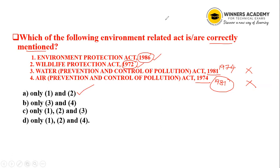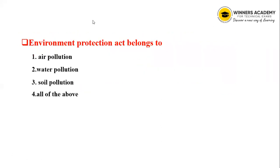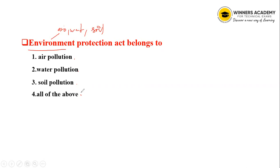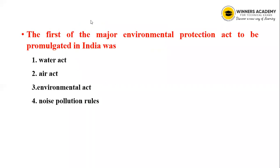Next question: Environment Protection Act belongs to which type of pollution? Options are air pollution, water pollution, soil pollution, and all the above. Environment Protection Act covers air, water, living creatures, soil — all the above.